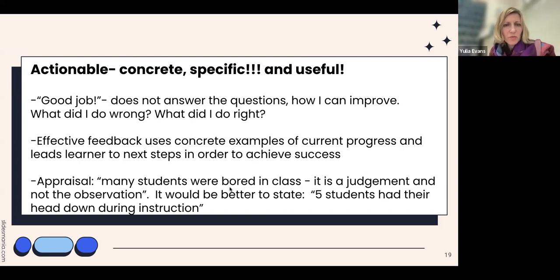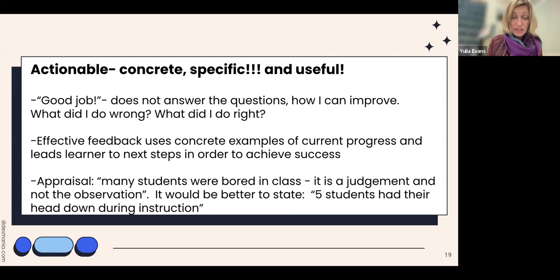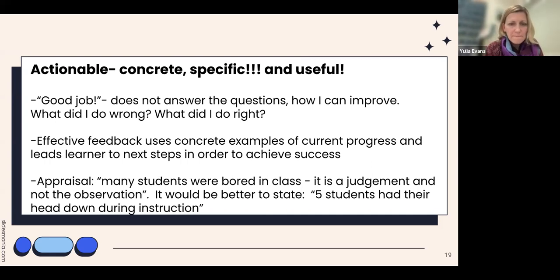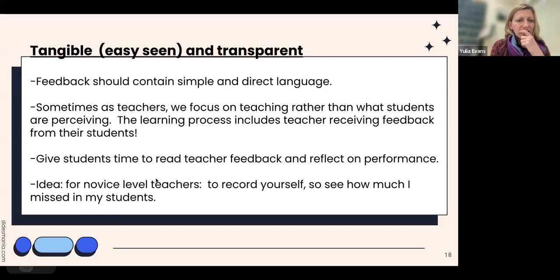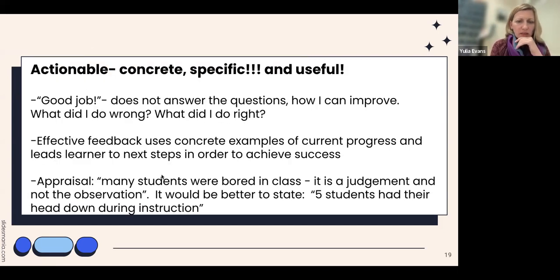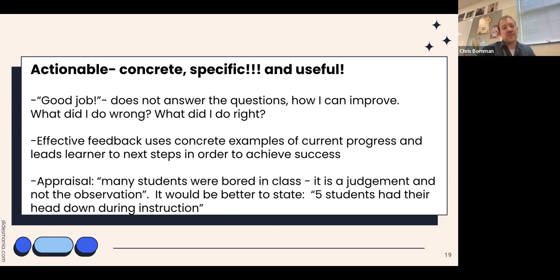Actionable: very specific — what needs to be done exactly and what is useful. 'Good job' is good for building relationships but not very actionable. Concrete examples: 'I really like that you used this past tense — use this.' Feedback should be more observational rather than judgmental. If an observer says students are bored in class, that's a judgment — more specific would be 'I have five students with their head down or five students on their phone.' That's an observation. Once we start judging, it's a slippery slope and students could lose motivation.